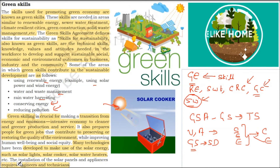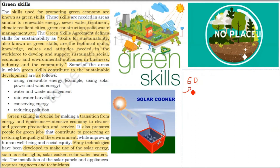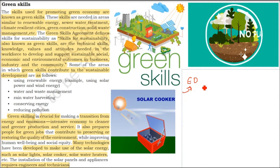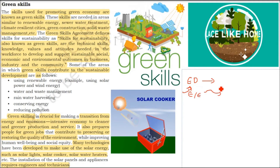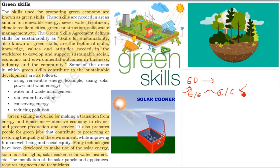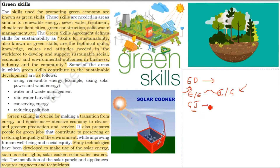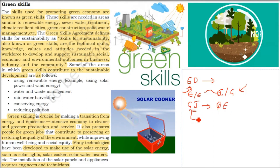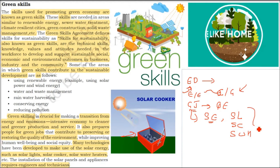Green skills contribute to sustainable development by using renewable energy sources — slowly transferring to solar power, wind energy — and through waste management and water management. Knowing how to do rainwater harvesting is also a green skill. Conserving energy in every day-to-day activity and reducing pollution to a minimum extent are all part of green skills. Green skills are very crucial because we are transitioning from an energy-intensive economy to a cleaner, greener production model.